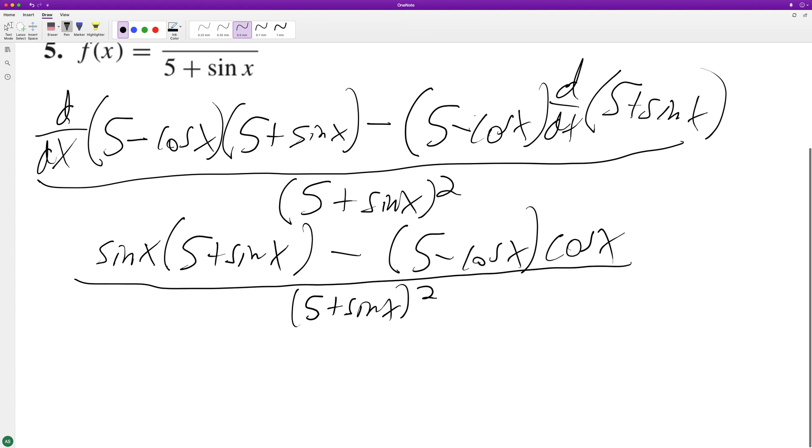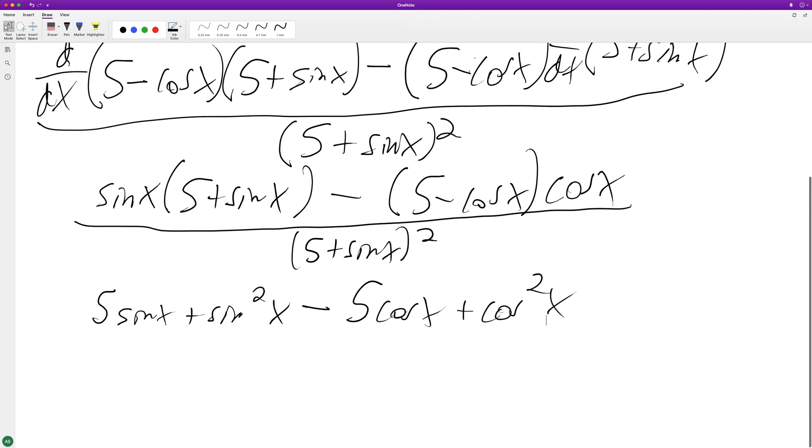So what this ends up being is 5 sine of x plus sine squared of x minus 5 cosine of x. Got to be careful here, we're distributing the minus sign, so this becomes positive cosine squared x. We have 5 sine of x minus 5 cosine of x plus sine squared of x plus cosine squared of x.